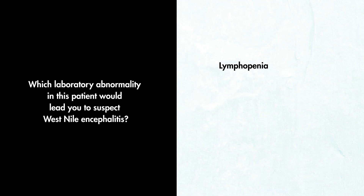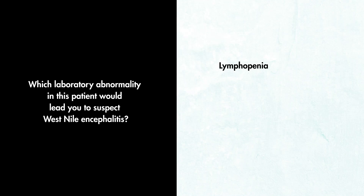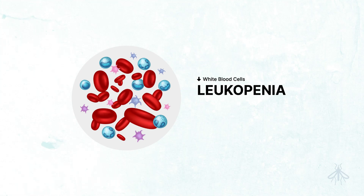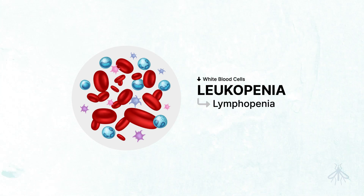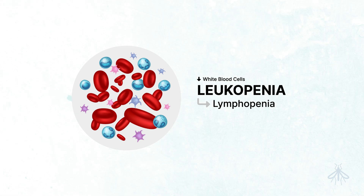The correct answer is lymphopenia. People with West Nile encephalitis will have a leukopenia with a profound and prolonged lymphopenia, which could help you distinguish this pathology from other causes of encephalitis.